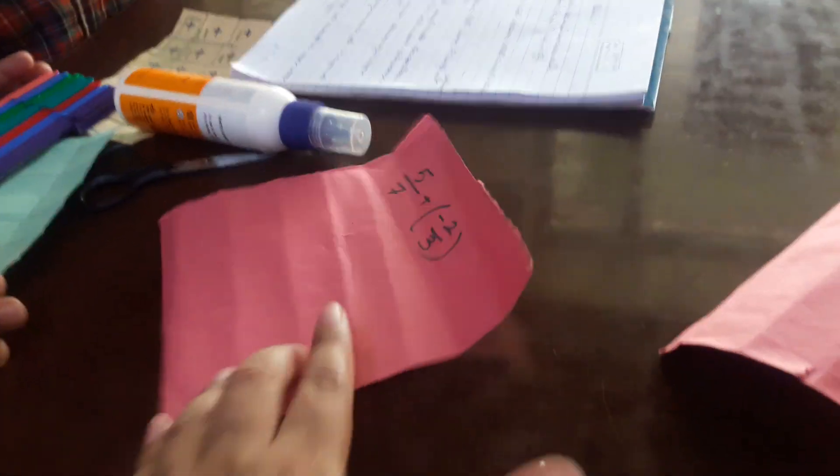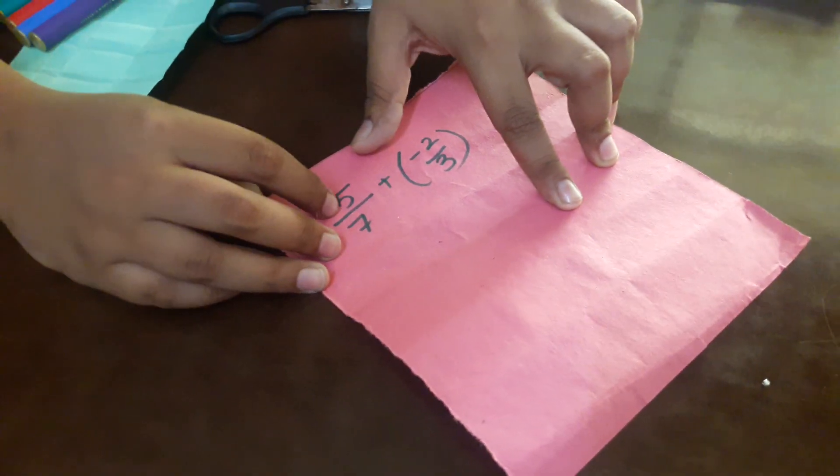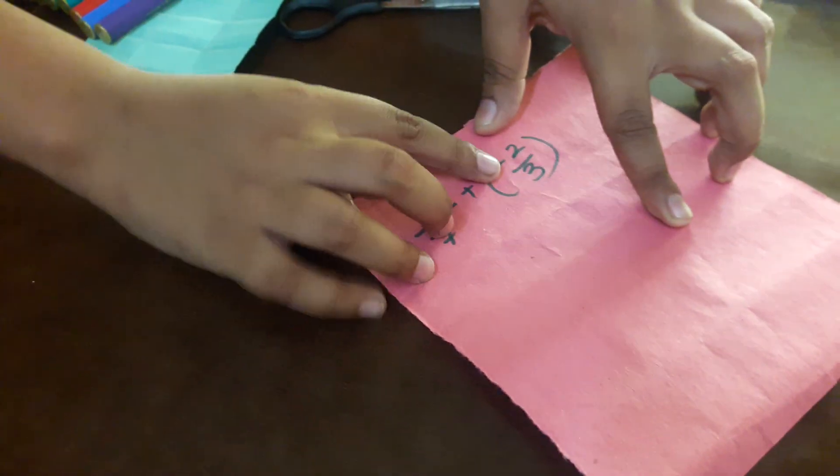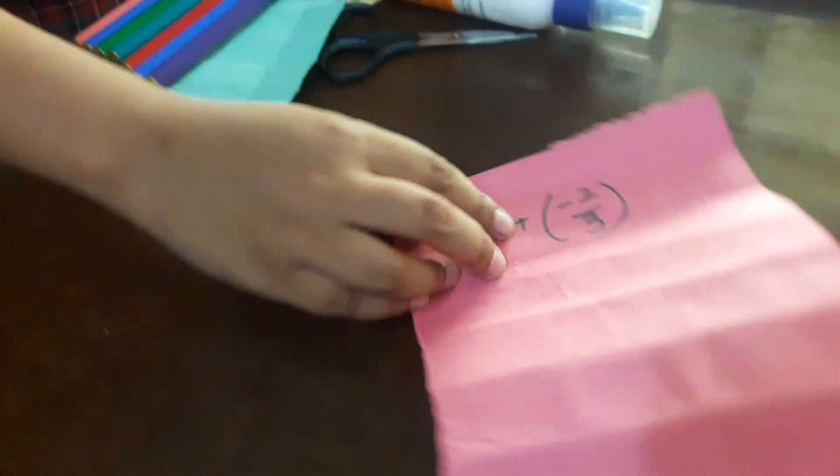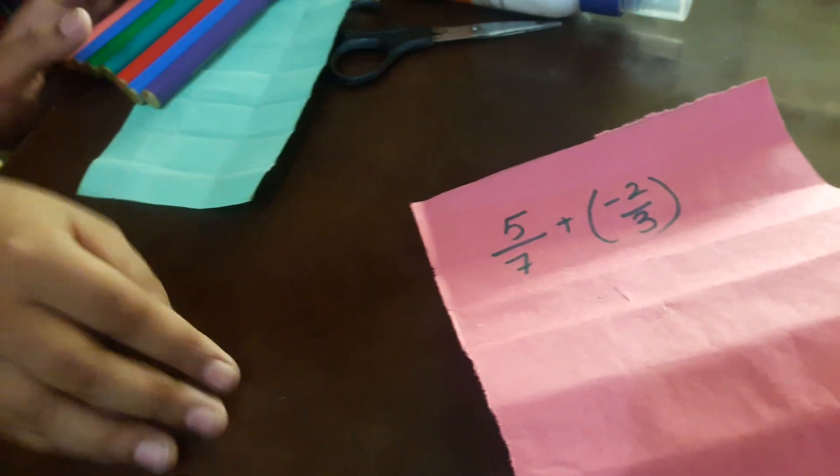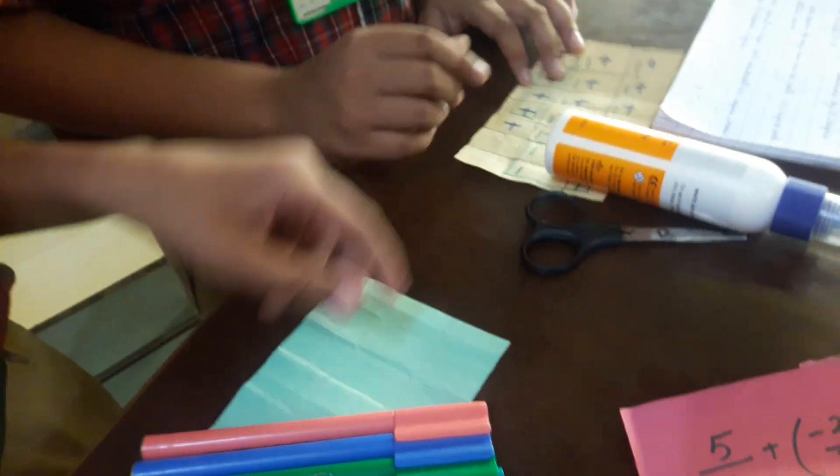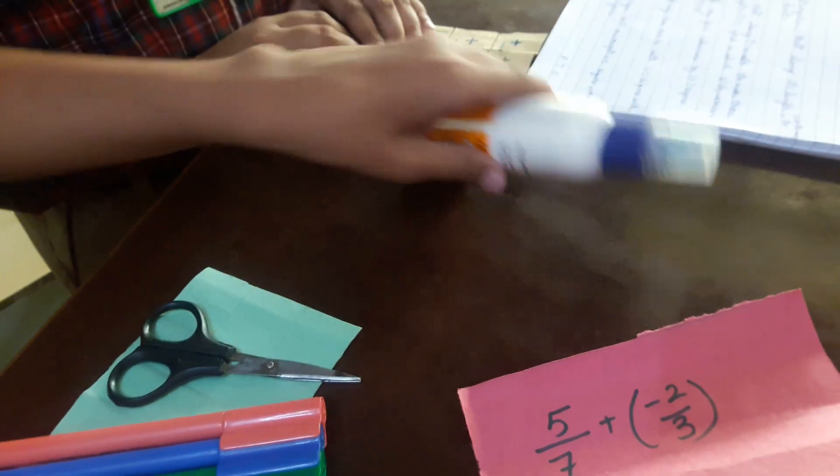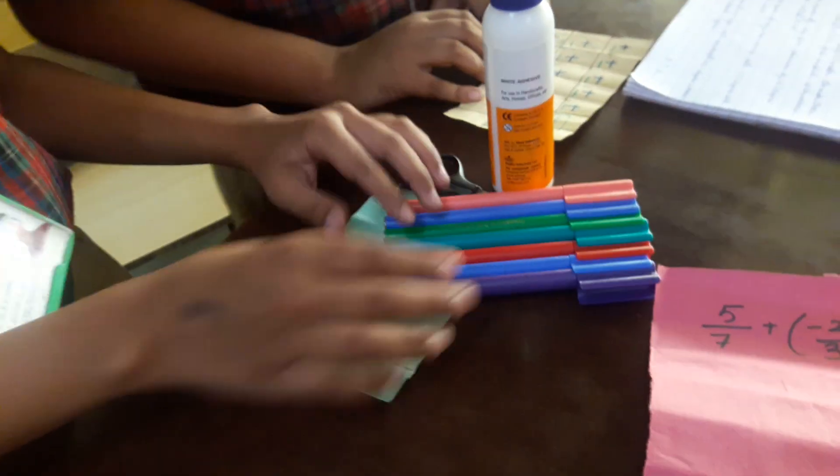For example, we want to add 5 by 7 plus minus 2 by 3. Things needed in this activity are a rectangular sheet, some sketch pens, a scissor and a glue stick.